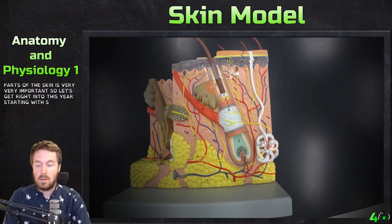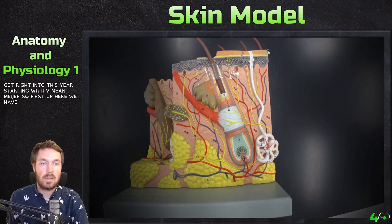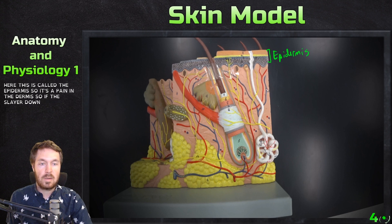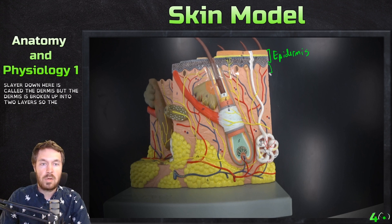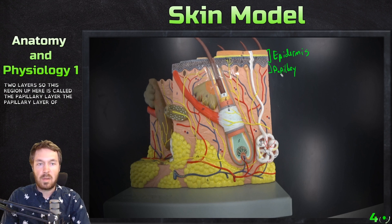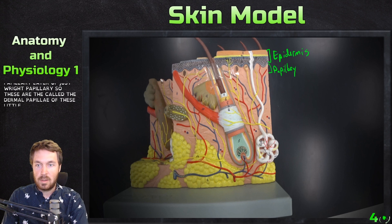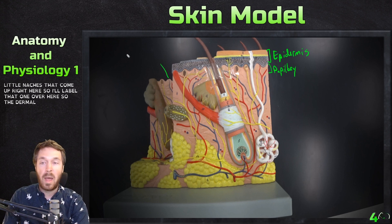Starting with the main layers: first up we have this layer right here, called the epidermis — it's upon the dermis. This layer down here is called the dermis, and the dermis is broken up into two layers. This region up here is called the papillary layer. These little notches that come up here are called the dermal papillae.